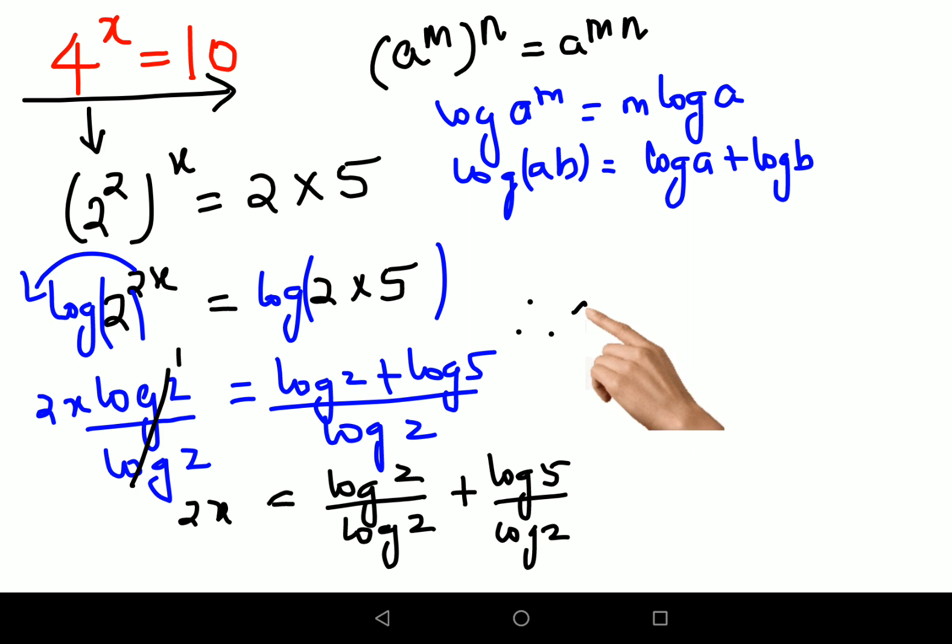Therefore I can say 2x equals to 1 plus—now understand, log of a upon log of b can also be written as log of a to the base b.